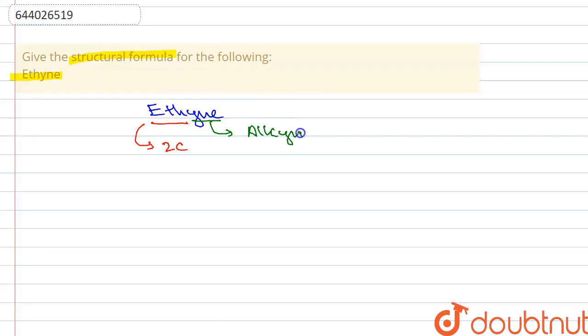And alkyne contains triple bond between two carbon atoms. Okay, so let's write down the structure for it.